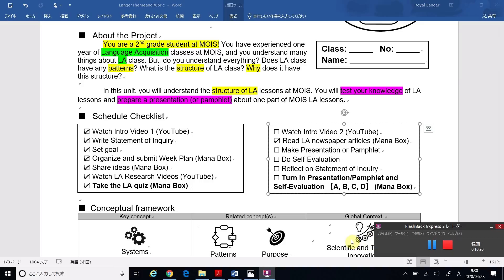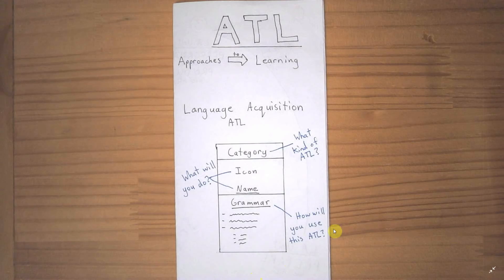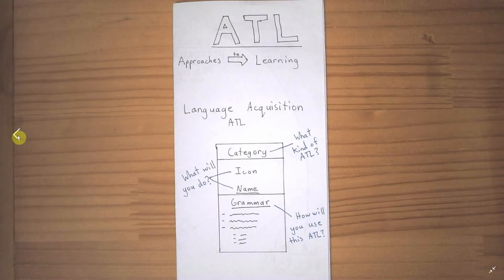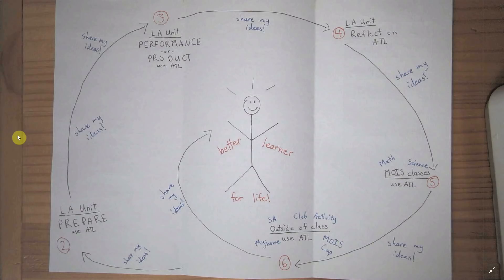I got feedback and advice after I finished my pamphlet, and I tried to make it one more time. Here is my finished product. This is my pamphlet about ATL — there are three parts to it. If you open it up one time, it looks like this. If you open it up one more time, it looks like this. ATL can help us to be a better learner for life.